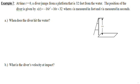This example says that at time t equals 0, a diver jumps from a platform that is 32 feet from the water. The position of the diver is given by this equation here, s(t) = -16t² + 16t + 32, where s is measured in feet and t is measured in seconds. We are to address two separate questions, the first of which: when does the diver hit the water?